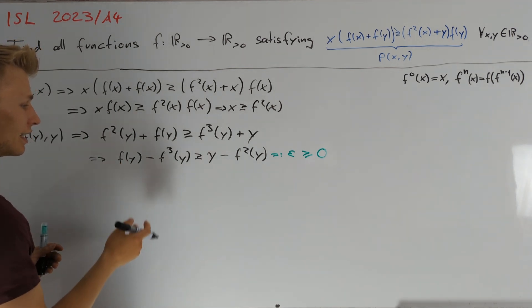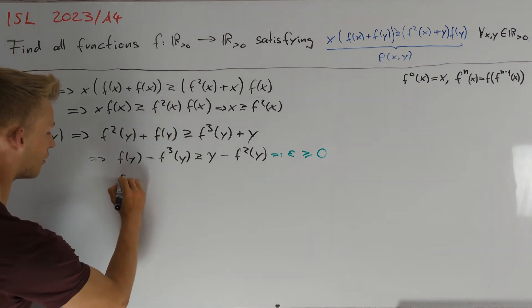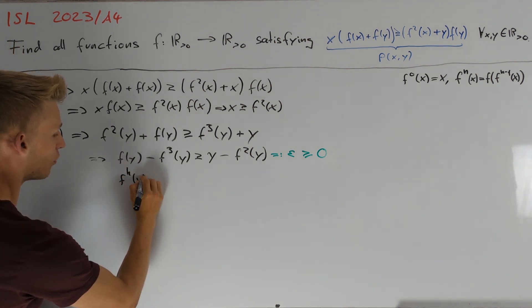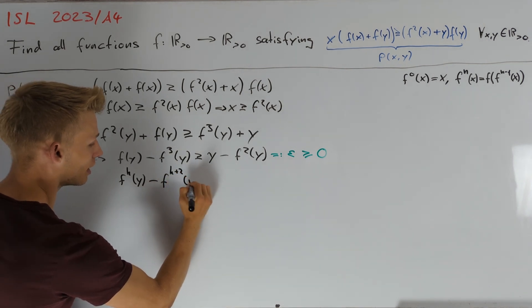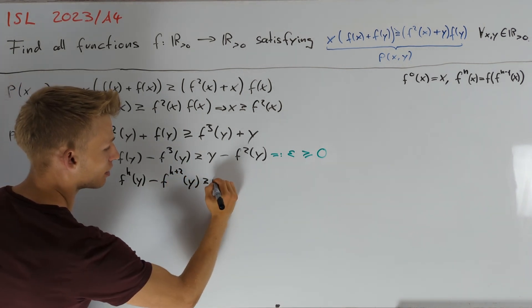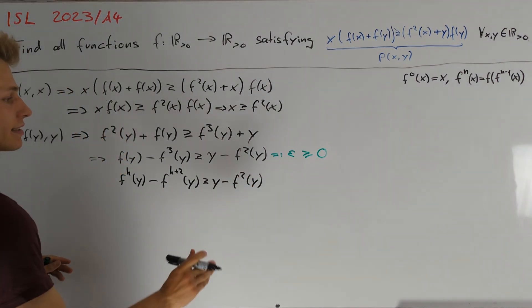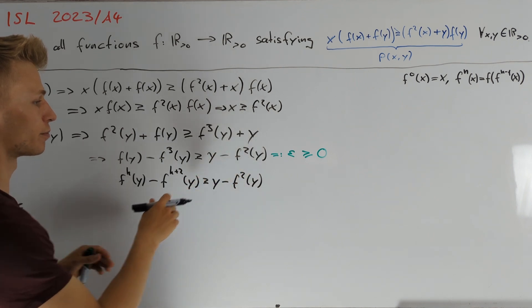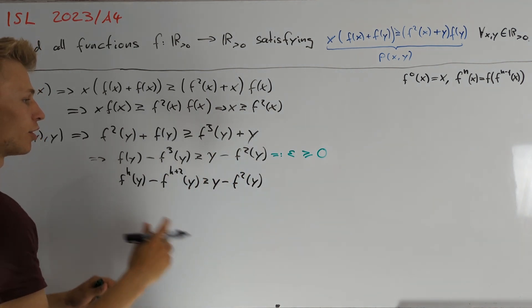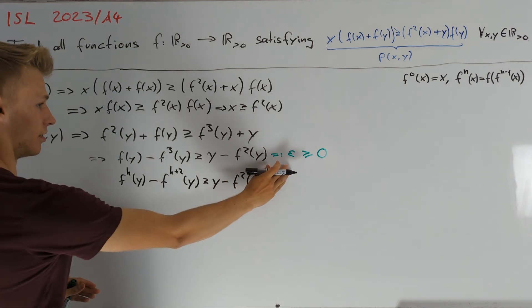And therefore, by plugging in f(y), then f²(y) and so on, we get inductively that f^k(y) minus f^(k+2)(y) is greater than or equal to y minus f²(y). This implies that the sequence f²(y), f⁴(y) and so on, decreases in every step by at least epsilon.